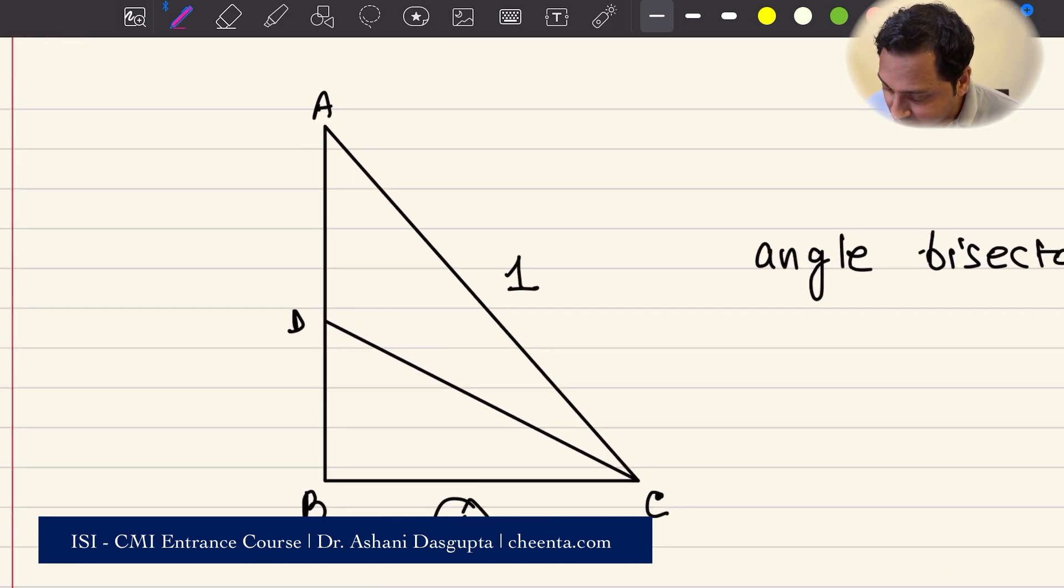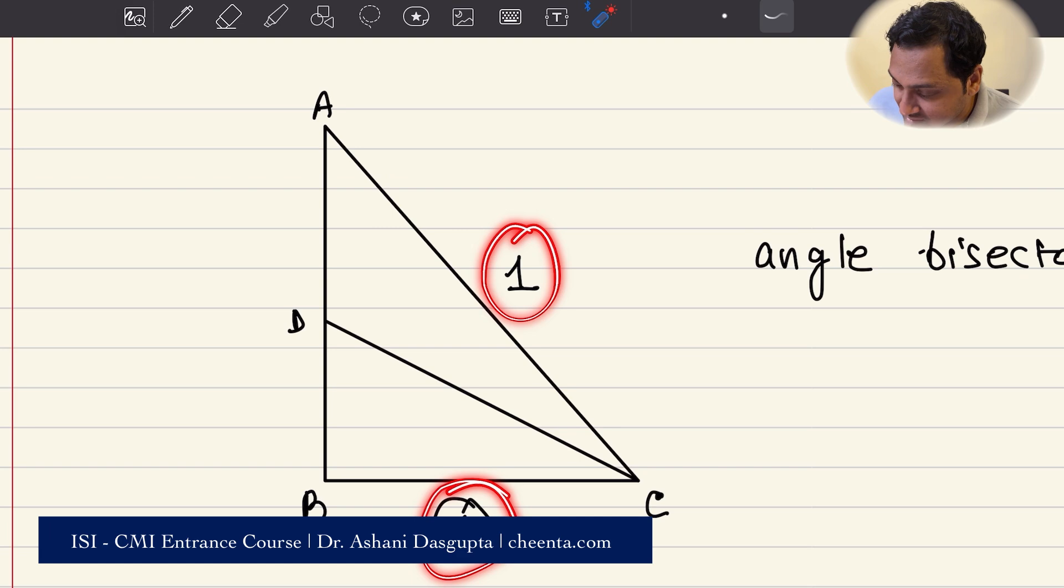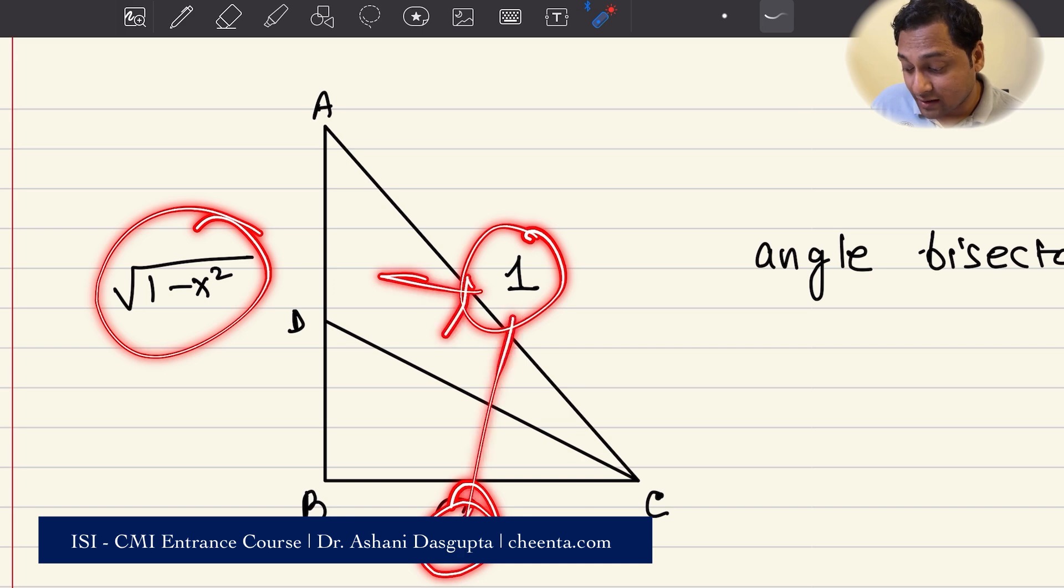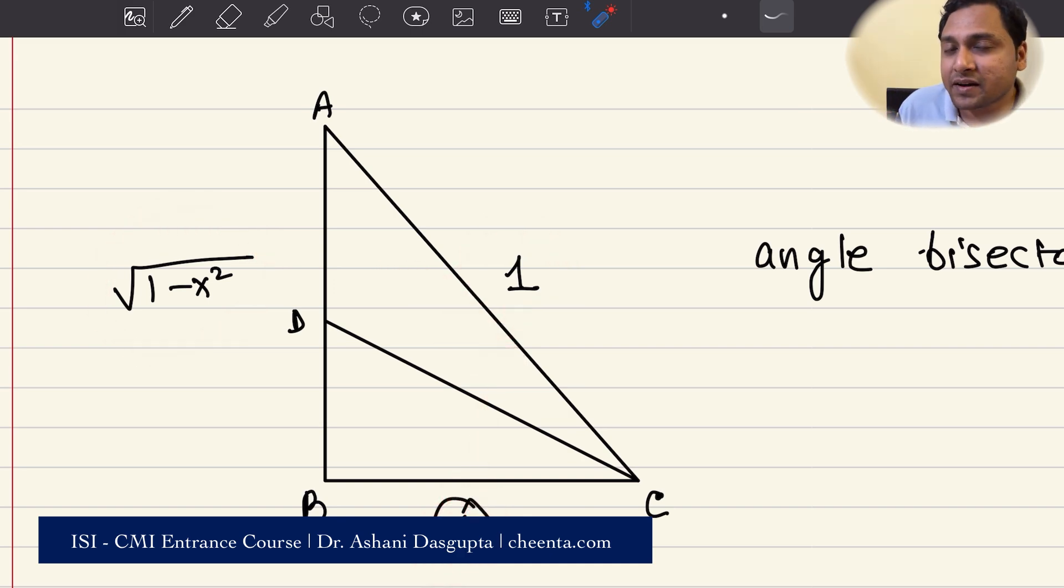So here, clearly, if this is 1 and this is X, then therefore by Pythagoras theorem, this is square root of 1 minus X squared, right? Because just by squaring these two and adding up, we will get 1. So just by using Pythagoras theorem, we can prove this. So now we know that BD over DA is simply X over 1. BD over DA is X over 1. That's the angle bisector theorem.